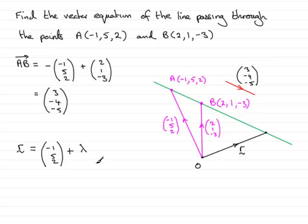followed by any amount of this vector. And any amount is often represented as lambda, but you could use any other letters. If you want to use Greek letters, fair enough, you might want to use common letters like S and T that you'll find in textbooks. So, we've got minus 1, 5, 2, that's O to A, followed by any amount in the direction then of this vector, which is 3, minus 4, minus 5.